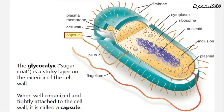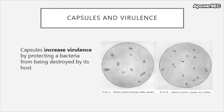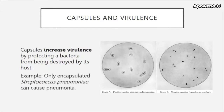The glycocalyx or capsule provides protection to the cell from being attacked by other cells. In this way it helps protect the cell from the host immune system and contributes to the cell's ability to be virulent or cause disease. A positive test for a capsule results in a halo-like image around the cell, whereas a negative result lacks that halo. An example of an organism that uses capsules to protect itself from the host immune system is Streptococcus pneumoniae, which can cause pneumonia.